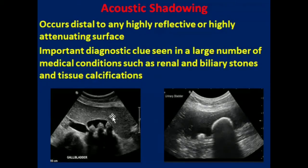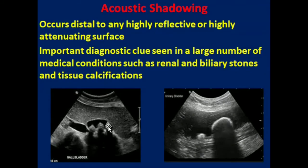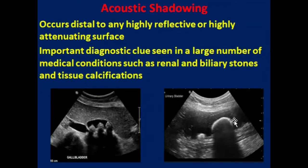In this image we can appreciate that within a cystic structure there are hyperechoic structures present. These are stones within the lumen of the gallbladder, and as we can appreciate, these stones are causing posterior shadowing. This is also the urinary bladder — a cystic organ containing a hyperechoic or highly reflecting structure in its lumen — and it is also causing posterior shadowing.